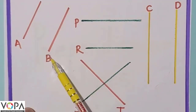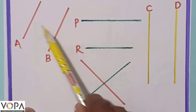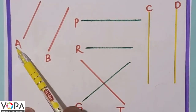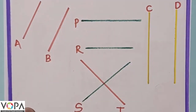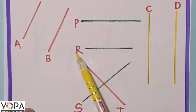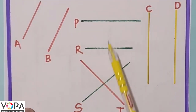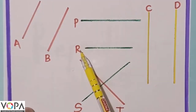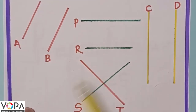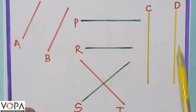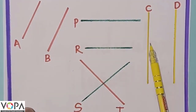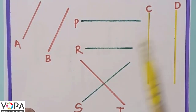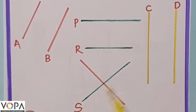Line A and B are the same distance from each other, so line A and B are parallel lines. Line P and line R are the same distance from each other, so line P and R are parallel lines. Line C and line D are also the same distance from each other, so line C and D are parallel lines.